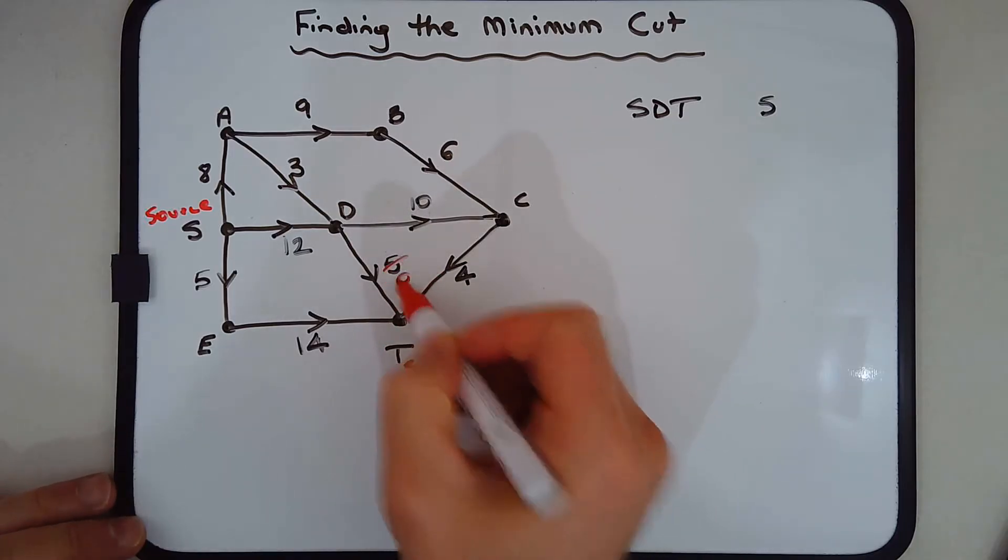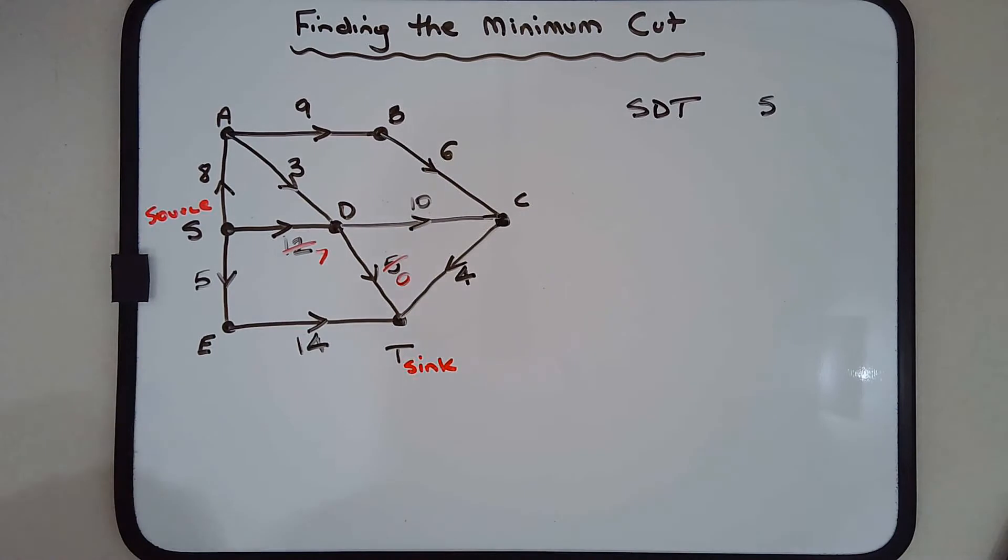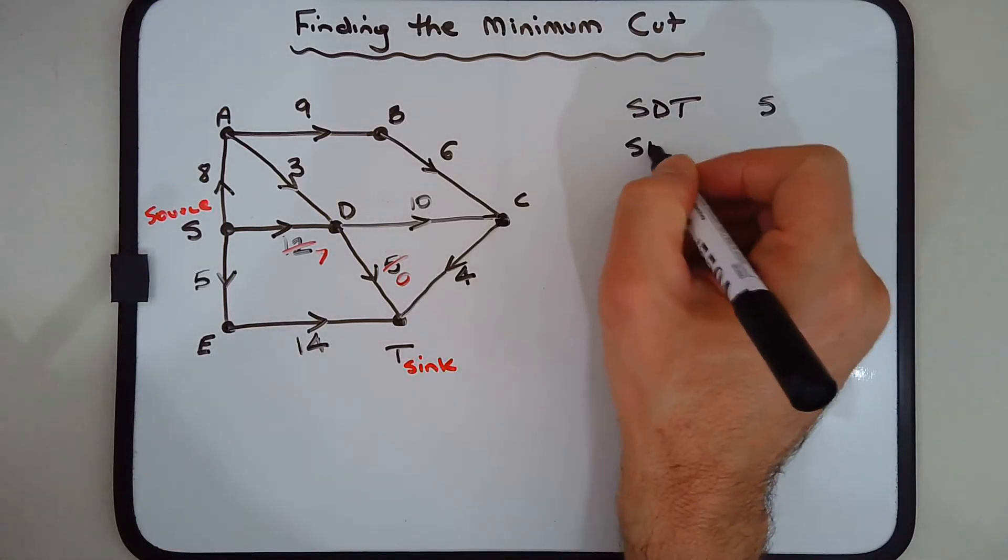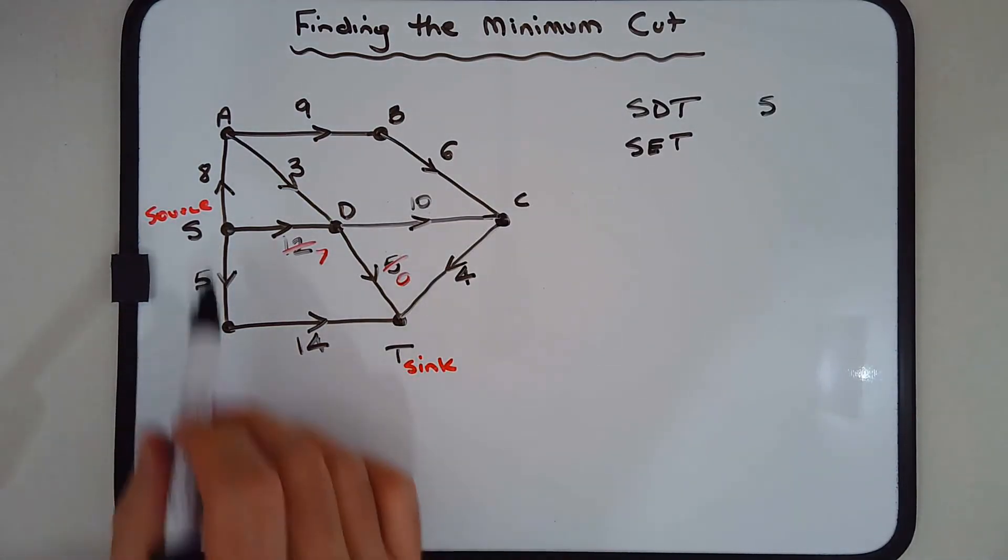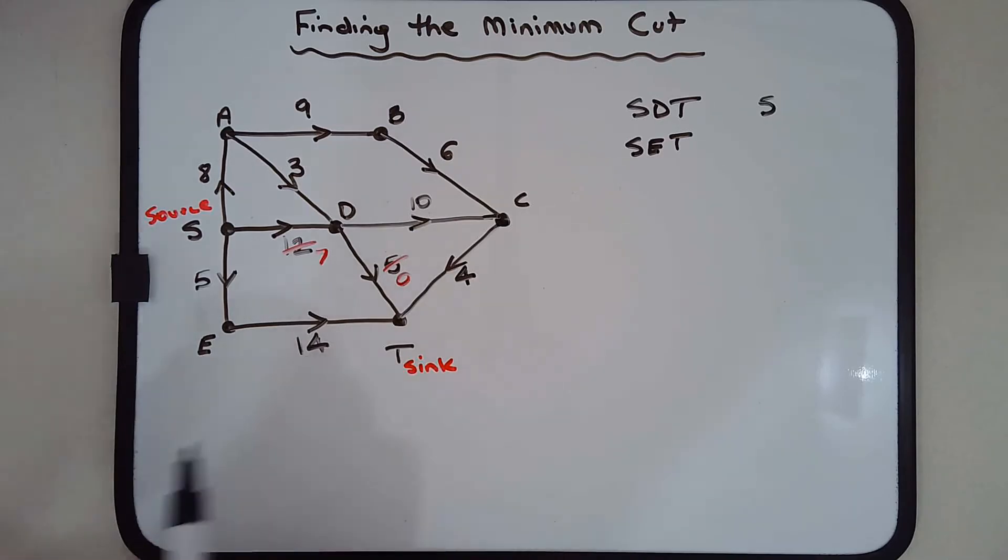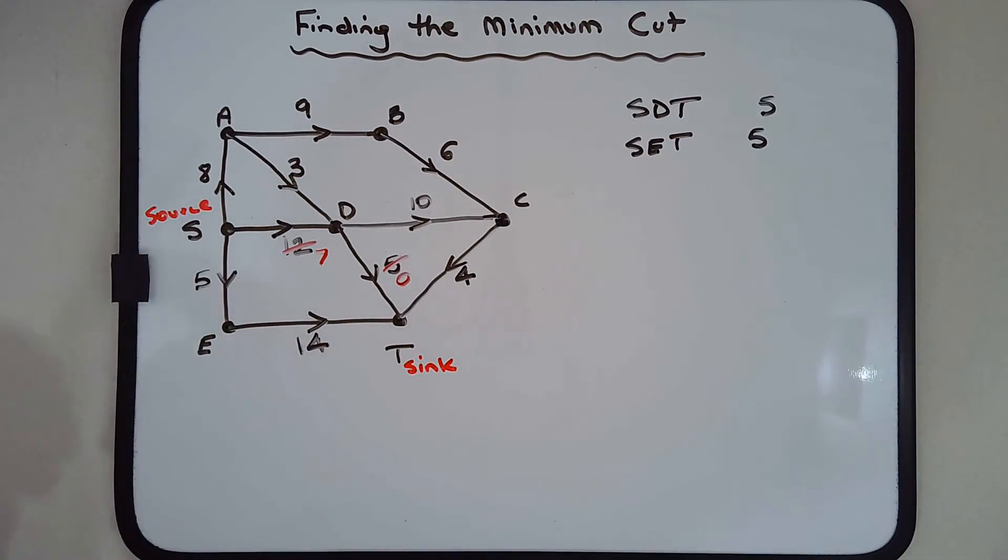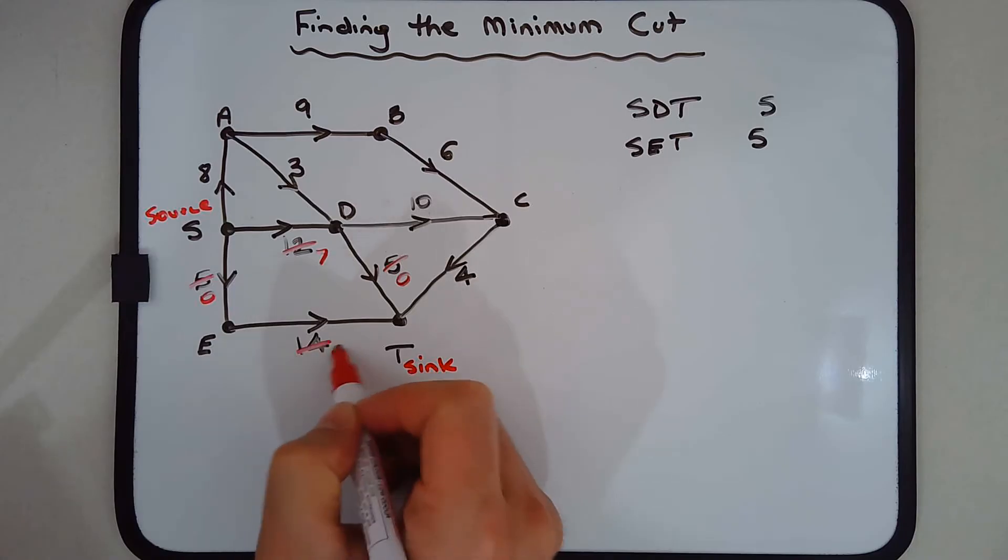Let's subtract 5 from all that and we've got 7 there. Another simple path from source to sink is SET, which also has a capacity of 5. Let's put 5 there because SE determines the maximum flow of that entire path. So let's subtract 5 from that, and that becomes 9.